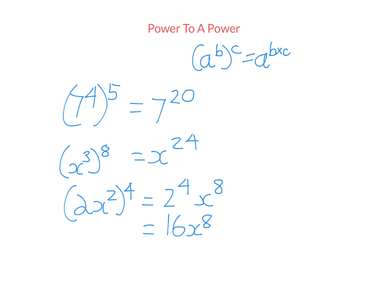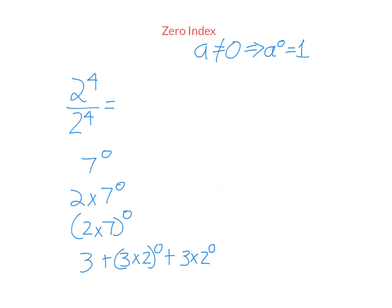For our final topic, let's look at the zero index. If I have 2 to the power of 4 divided by 2 to the power of 4: well, 2 to the power of 4 is 16, so this is 16 divided by 16, and anything except zero divided by itself gives 1. But using our earlier index law — same base divided by same base, keep the base and subtract the powers — this equals 2 to the power of 0. So 2 to the power of 0 must equal 1. This works for any base other than 0: 3 to the power of 0 is 1, 5 to the power of 0 is 1, negative 20 to the power of 0 is 1. Anything except 0 raised to the power of 0 is 1. So 2 times 7 to the power of 0 — remember BIDMAS means we do the index before multiplying — so 7 to the power of 0 is 1, and 2 times 1 is 2.